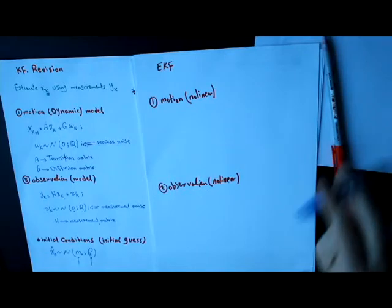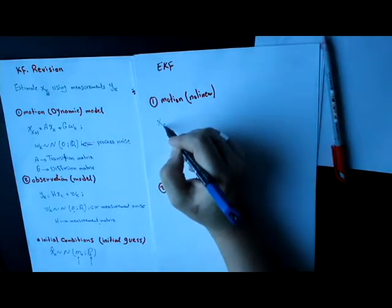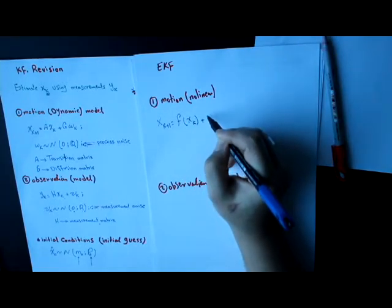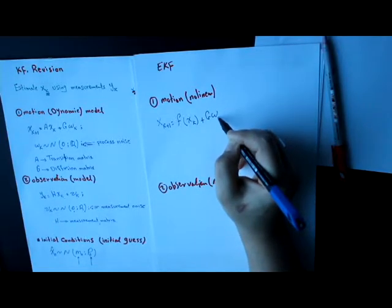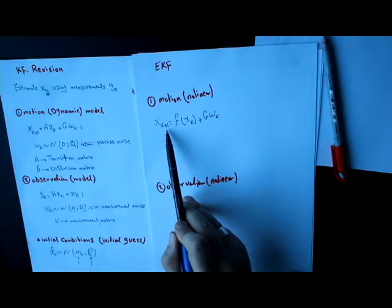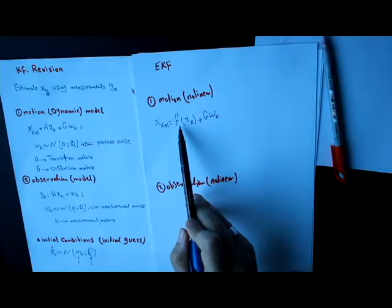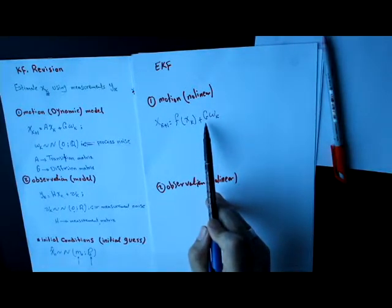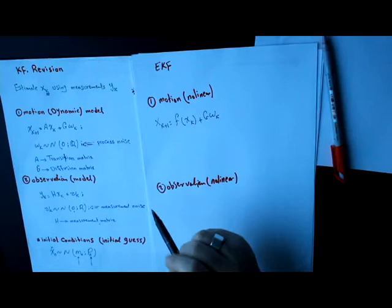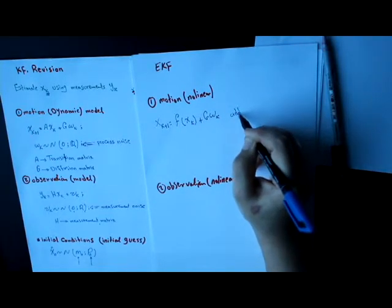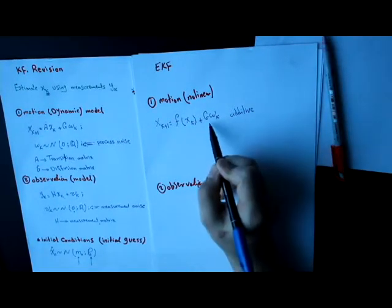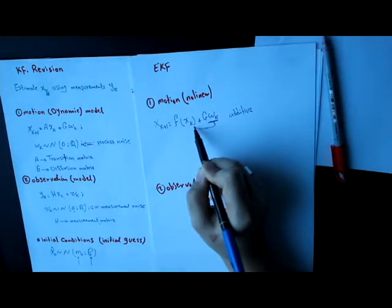If we define the motion model now, it will be defined like this: x at time step k+1 is some nonlinear function of x at time step k, plus G times w_k. This model is called an additive nonlinear model. Why is it called additive? Because the noise component is not a part of the nonlinear function.